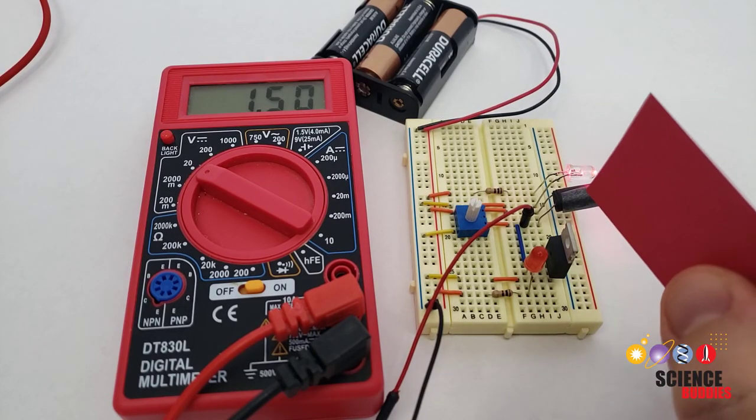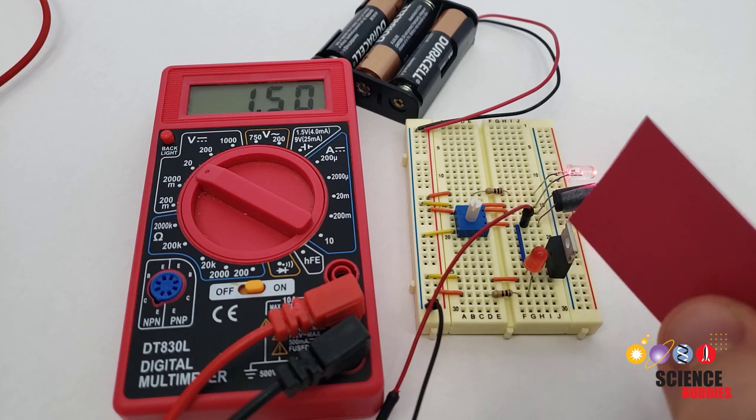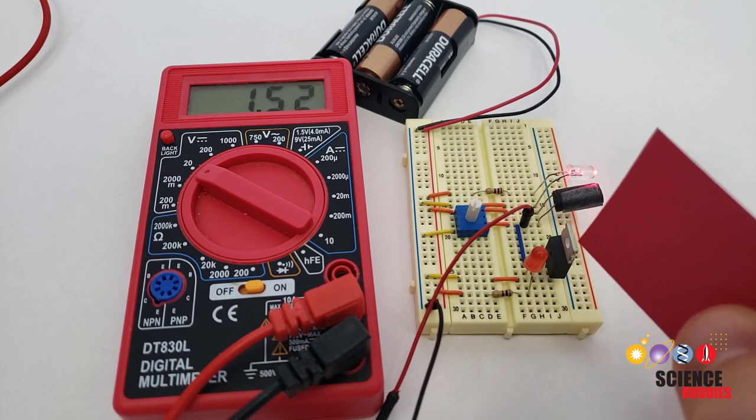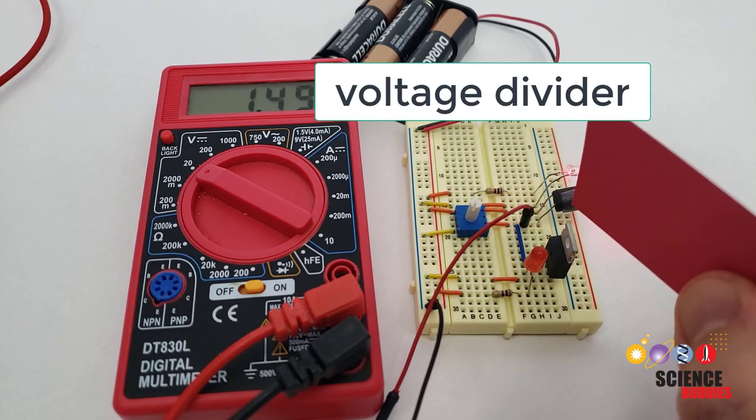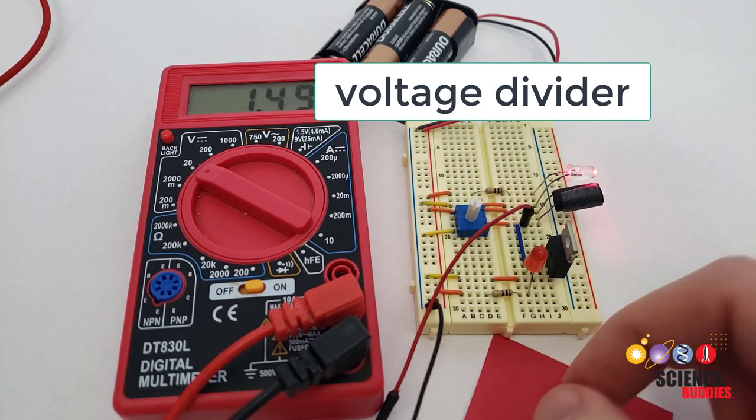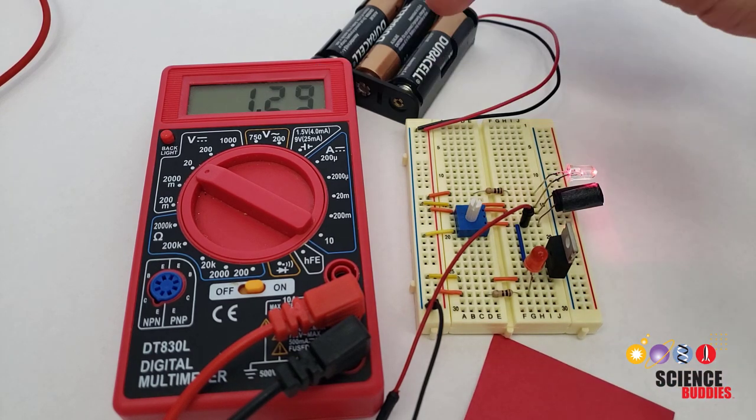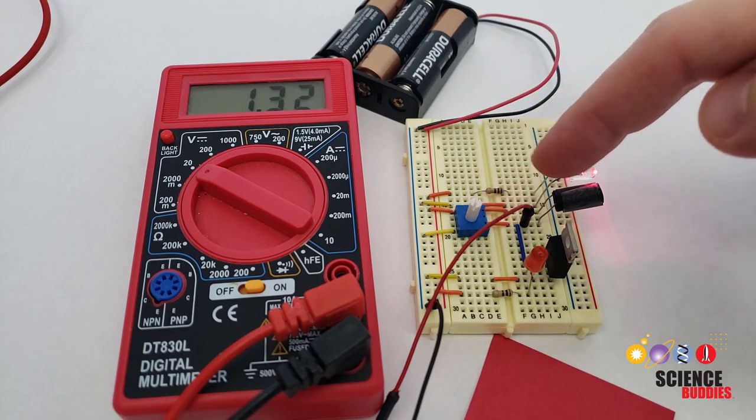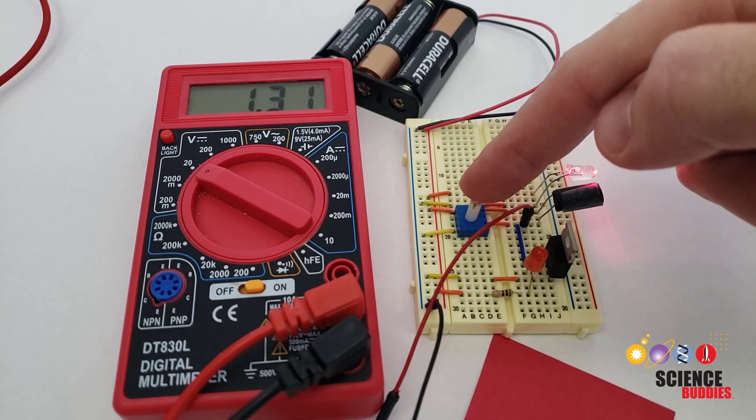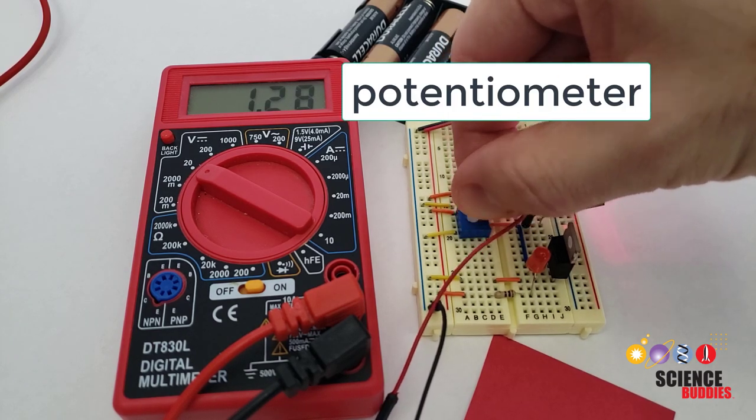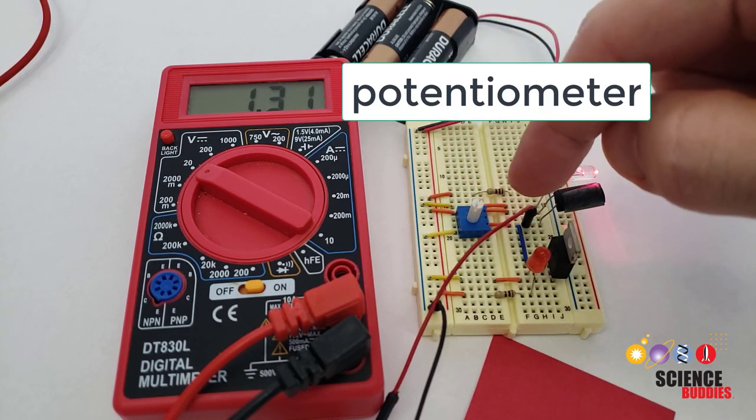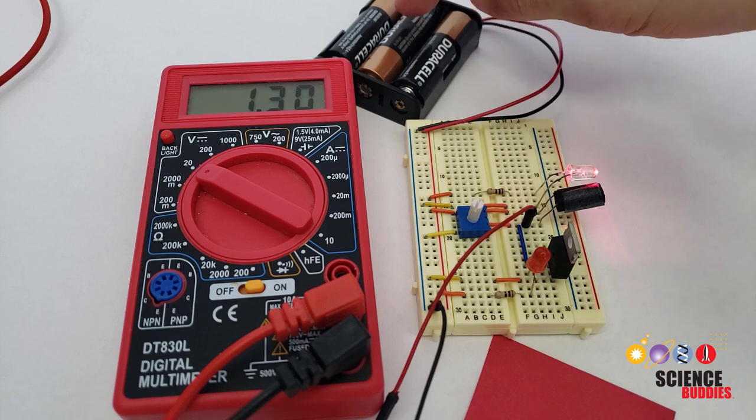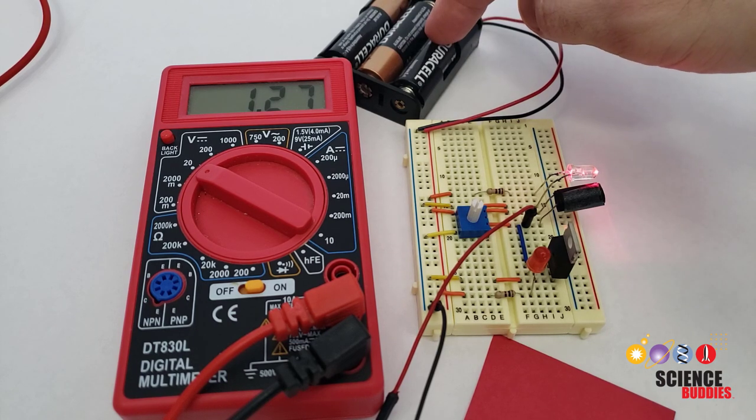The next question then is, how do we convert that changing resistance value to something that can control a separate indicator LED and turn it on and off? And we do that using a circuit called a voltage divider. A voltage divider, as the name implies, divides a voltage. So we have the source voltage from our battery pack, and our voltage divider, which consists of two resistors, one is the photoresistor, and another is the potentiometer here, which is a type of adjustable resistor. They will divide the voltage and output some voltage that is lower than the battery pack voltage.